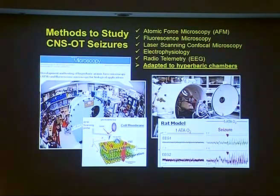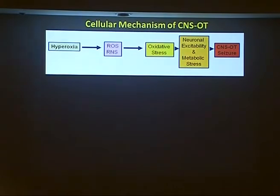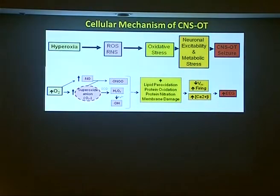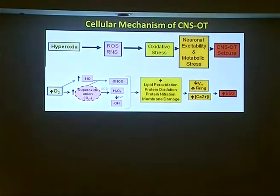We can screen for many different therapies that can delay the latency to seizure. Our model of the cellular mechanisms of CNS oxygen toxicity has resulted from a series of experiments. Under hyperoxic conditions, there is an increase in superoxide anion production and an increase in nitric oxide, which can stimulate the production of more damaging reactive oxygen species, including the hydroxyl radical. This causes membrane lipid peroxidation, protein oxidation, and protein nitration.